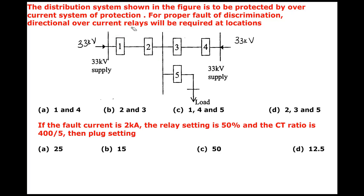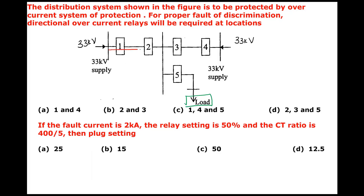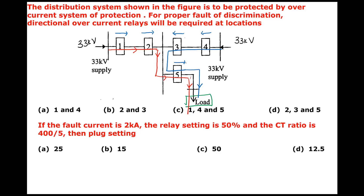When the system is healthy and load is present, the currents will flow from the supply source to the load in this direction — that is the direction of current flow under healthy conditions. From the other 33 kV feeder, currents will also flow to the load in this direction. These are the healthy current directions for all the relays.